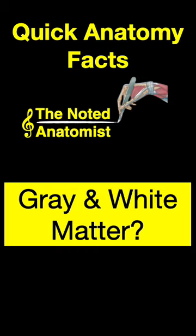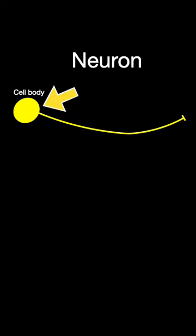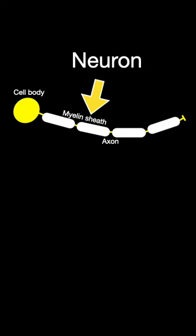To answer that question, let's look into the schematic of a neuron. There's a cell body, which usually appears gray grossly with a bunch of them together, and an axon — many axons in the central nervous system are myelinated — which then usually appears white in a gross section.